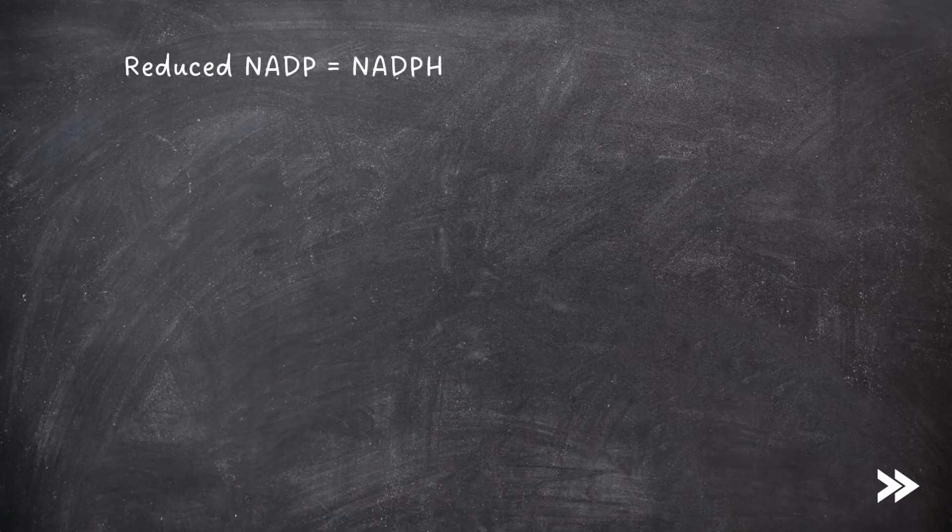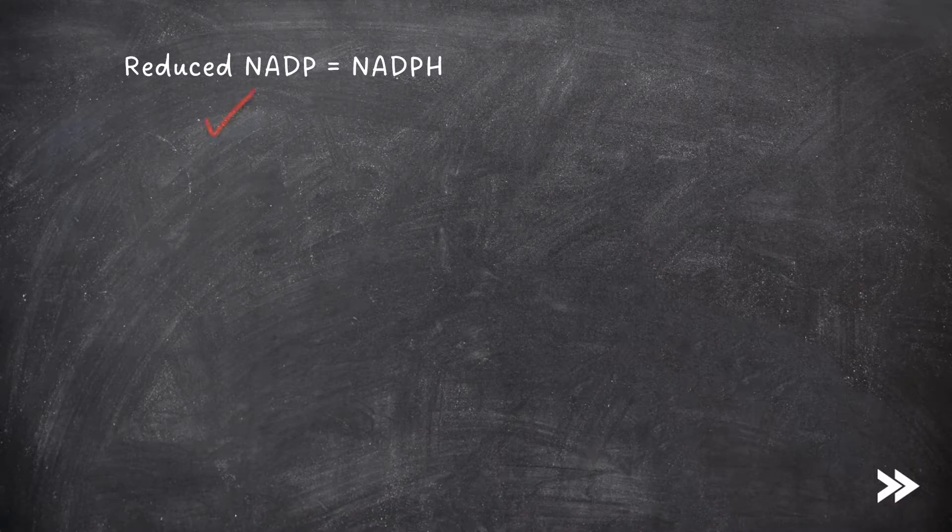That would be the light dependent reaction covered. Just before we move on to the light independent reaction I think this is a good point to clarify you on a few key terms and ways of representing things. You will have seen that the spec mentions the chemical reduced NADP. You may have also seen this being referred to as NADPH. Both are in fact correct and can be used in exams.